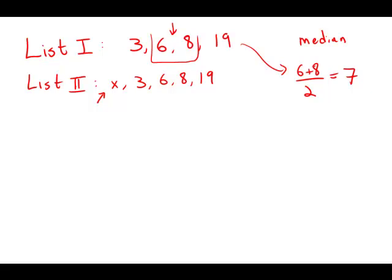If x were less than 3, then obviously the median would be 6, and the two lists would not have the same median. So x must be between 6 and 8.